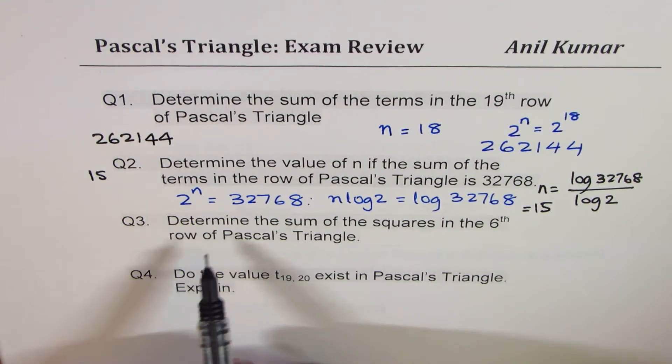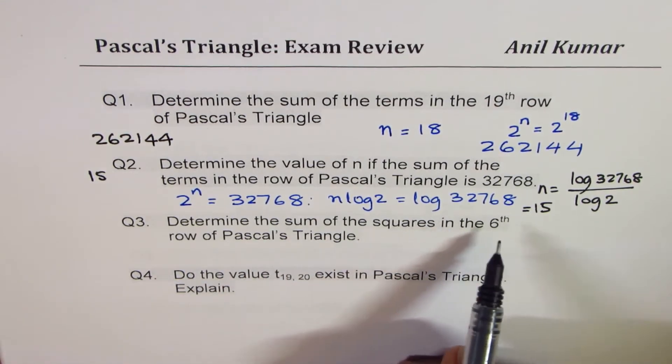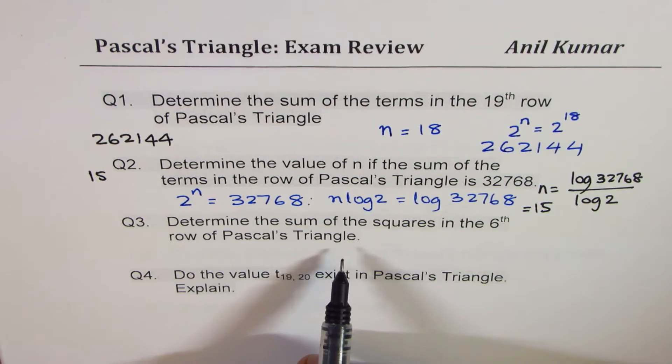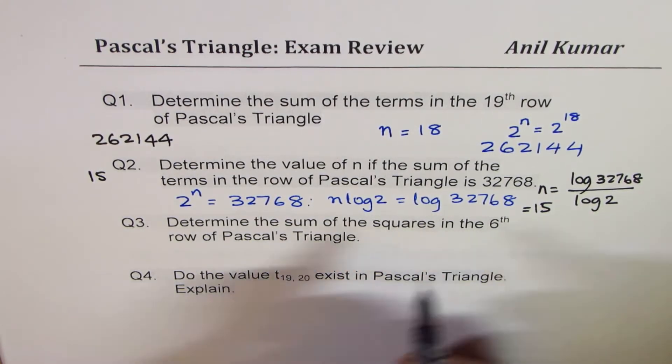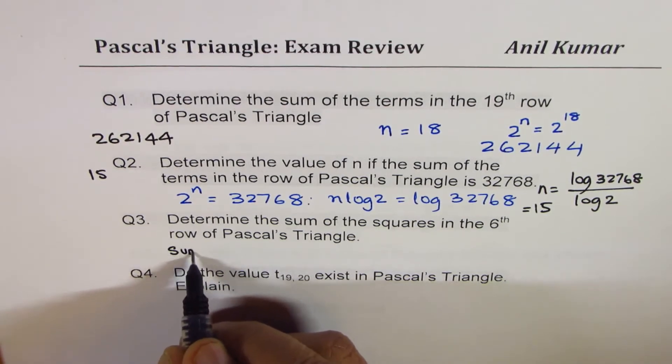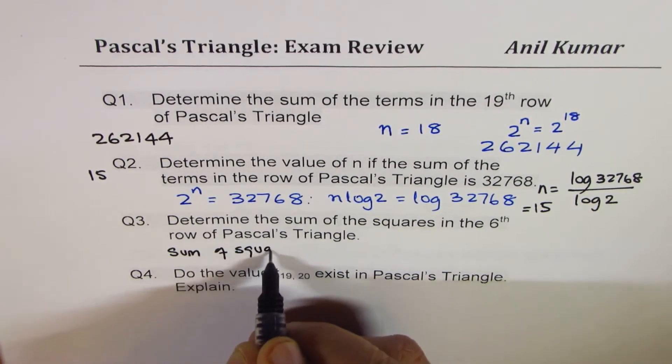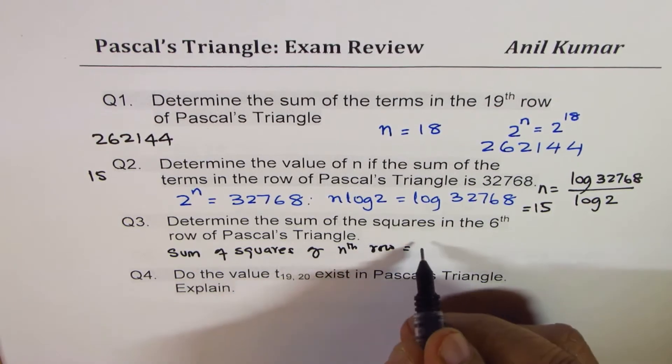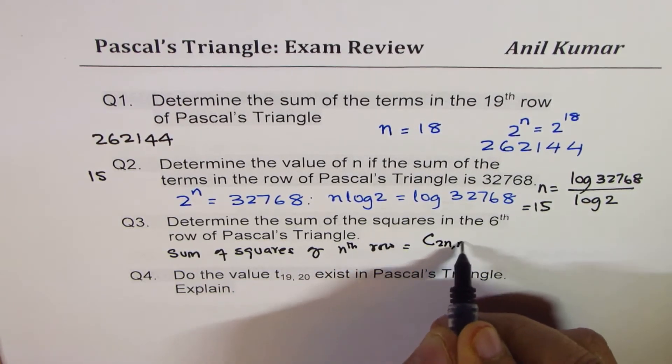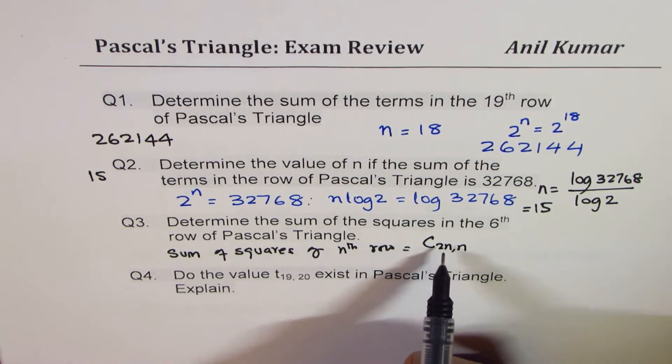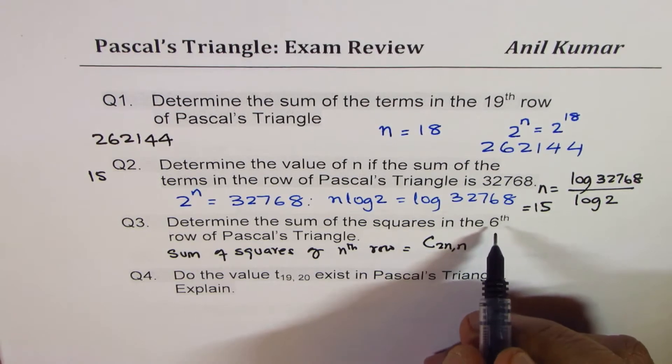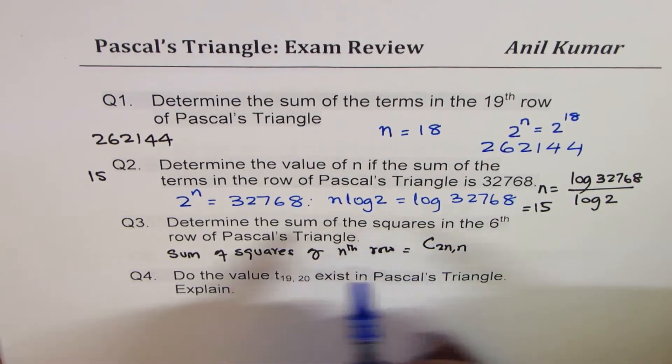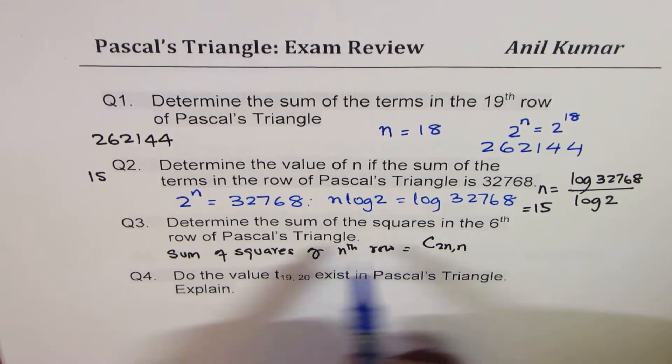Next question here is determine the sum of squares in the sixth row of Pascal's Triangle. Now, this is also from property of Pascal's Triangle. Sum of squares of nth row, the formula is sum of squares of nth row is actually equals to c2nn. The term number is t2nn. Now here, if n is sixth, what is n equals to? The sum of squares of 6th row. That means, row is given to us as 6.